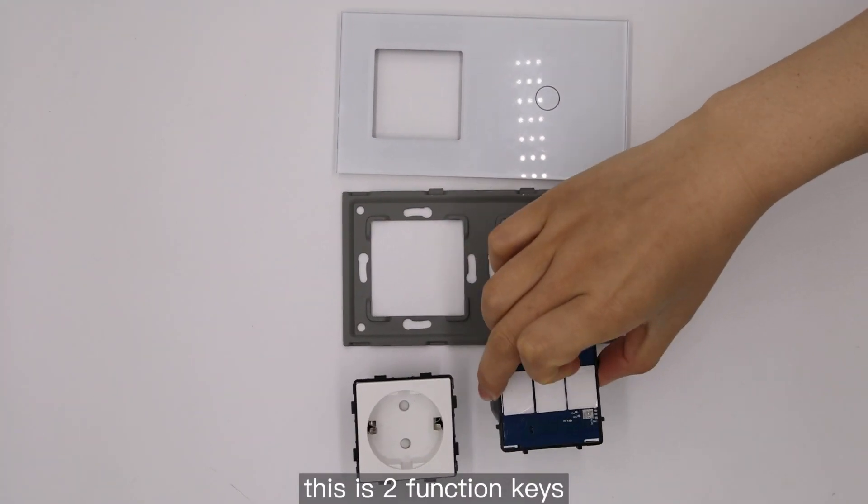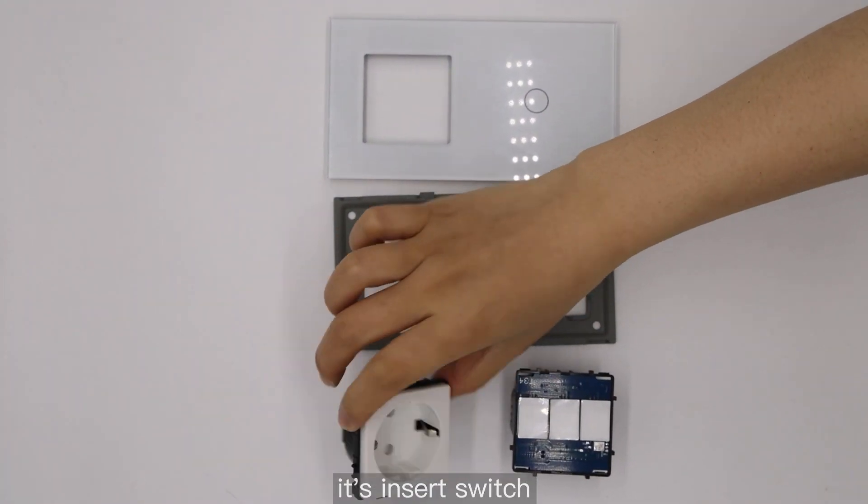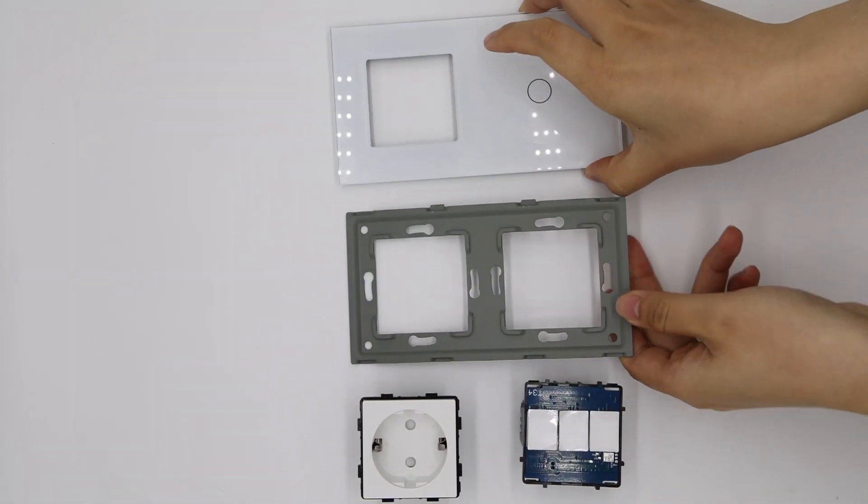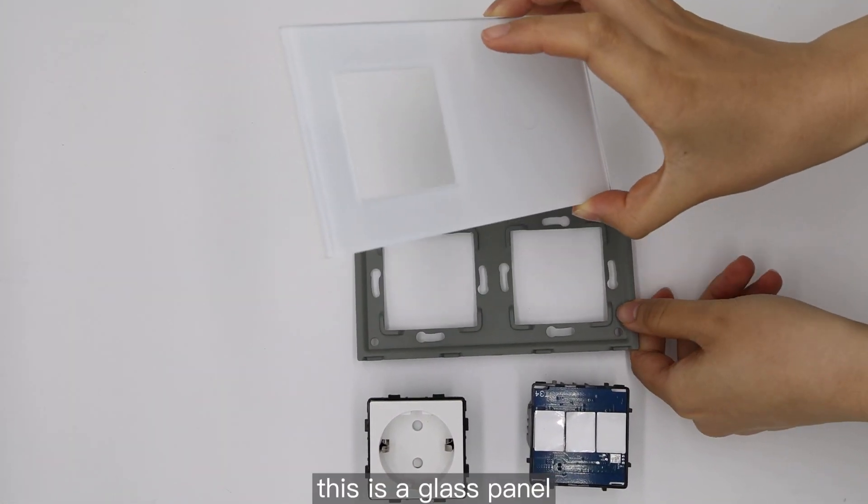This is the function 3K, the insert switch and the insert socket. This is the iron plate and this is the glass panel.